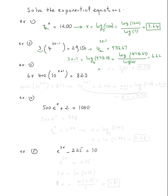Which means three x minus one is equal to six point sixty-two. This is just a linear equation — pretty easy. Add one to get three x equals seven point sixty-two, and then divide by three, which gives x equal to two point fifty-four.